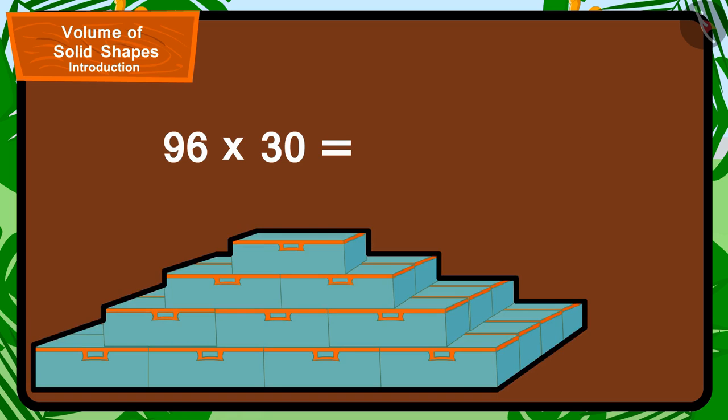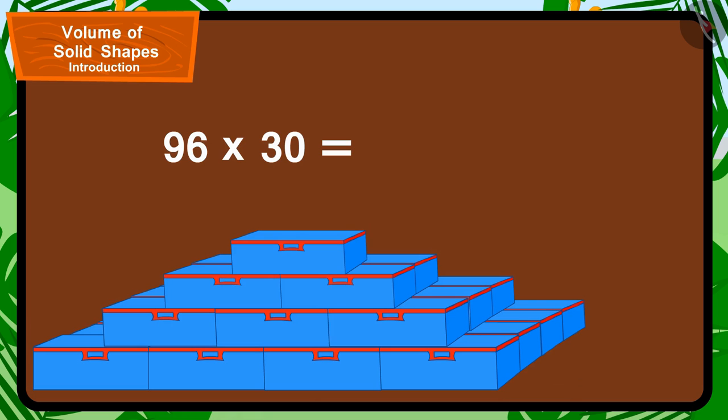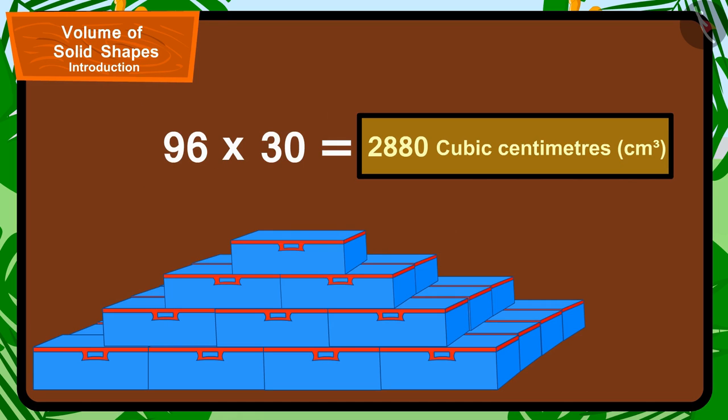In this way, the volume of all the compass boxes being used in the shape made by Babban will be 96 times 30, which equals 2880 cm³.